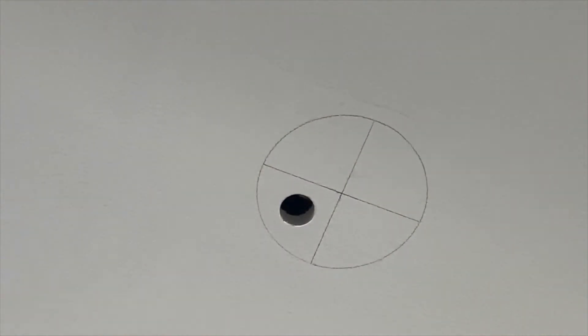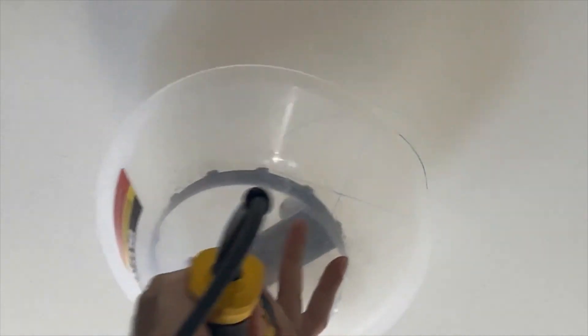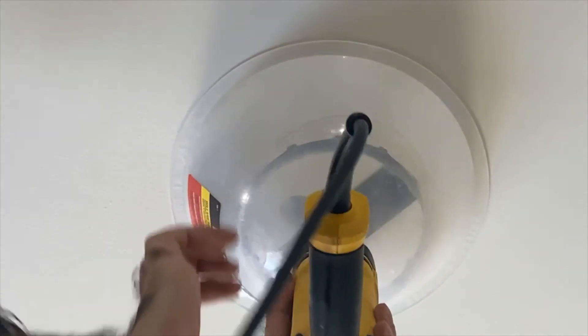All right, so now I have my six inch hole saw mounted here in the same way that I had the other one and I'm going to do the same thing I did before. I'm going to line up my hole first.